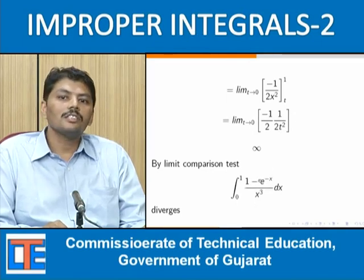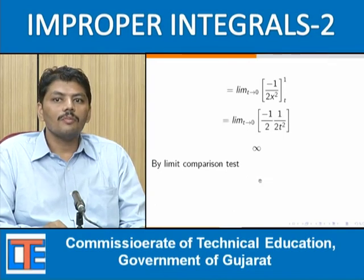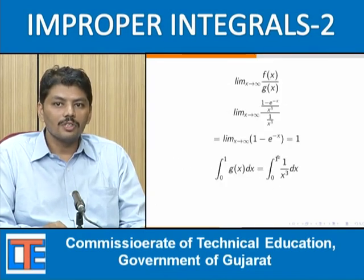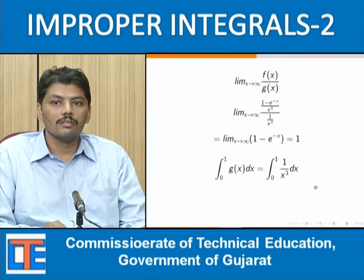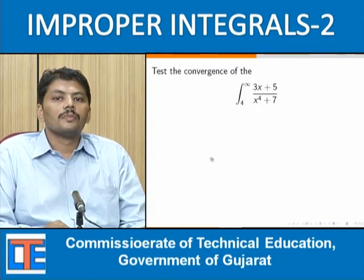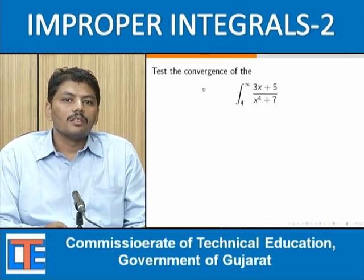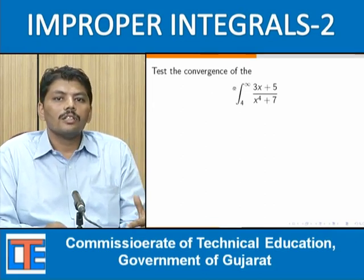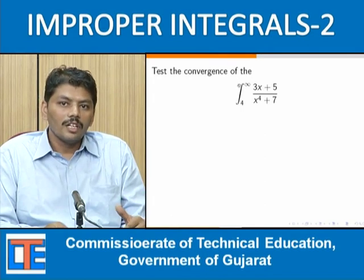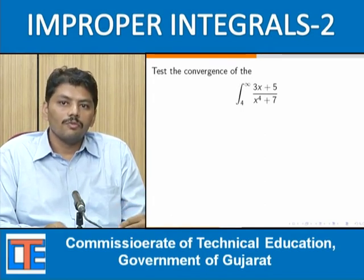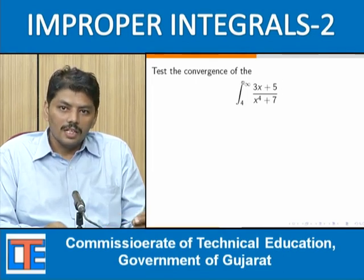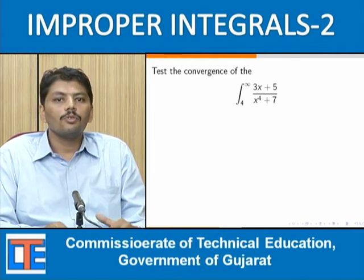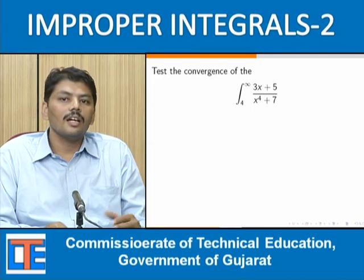They are convergent or divergent simultaneously. You must observe the limits carefully — if you don't check the limits and proceed directly, you will get the wrong answer. There are two tests: the comparison test and the limit comparison test. You must determine which test is applicable based on the integral given.